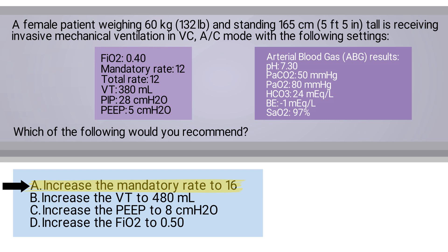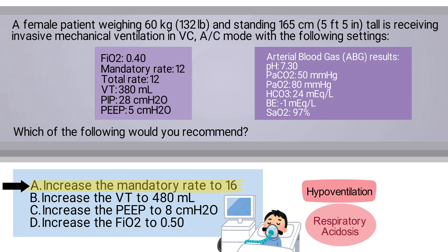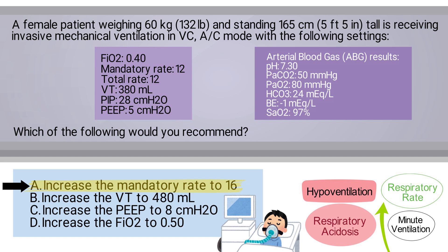The key takeaway for this question is this: for patients with respiratory acidosis due to hypoventilation on mechanical ventilation, the priority is to increase their minute ventilation. This can be achieved by raising the respiratory rate, which in this case is safer than increasing the tidal volume in terms of preventing lung injury.